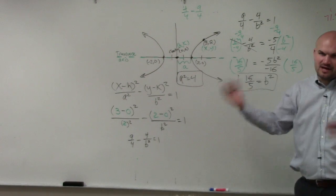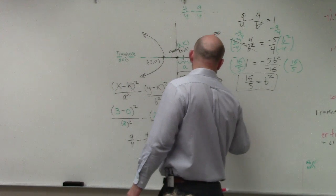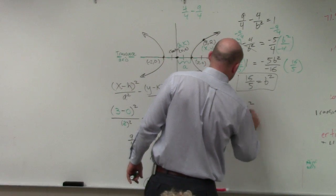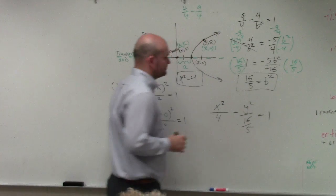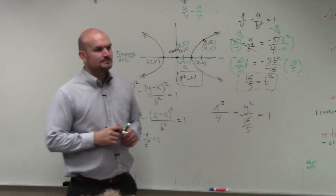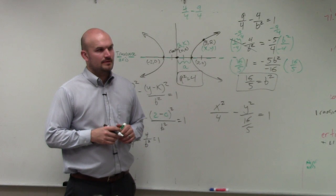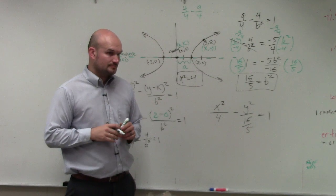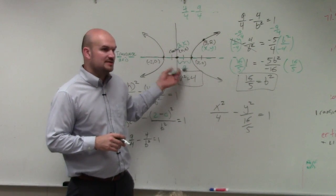And h and k is 0, so I don't include it. So now I just need to plug them into my equation. So I just write this as x squared over 4 minus y squared over 16 over 5 equals 1. Correct? So how did you get 4? How did I get 4? Well, a is 2. So a squared is 4.